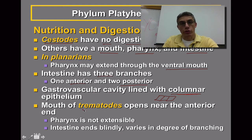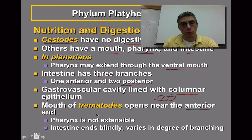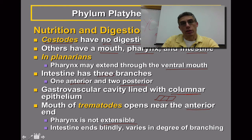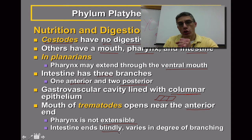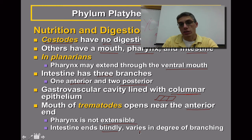The mouth of trematodes, which are a parasitic type of flatworm found within this group, opens near the anterior region of the animal — so the trematodes are a little different from planarians, which have a ventral mouth. The trematodes also do not have a pharynx that is extensible; it's not going to extend from the animal's body as it does in planarians. The intestines of both end blindly — they don't have a terminating pore or opening where waste material can be removed — and the amount of intestinal branching varies depending on the type of flatworm.